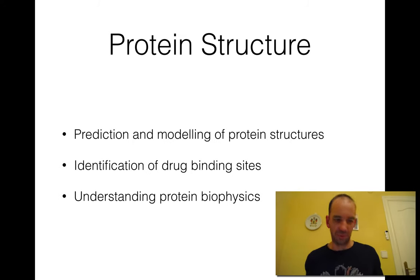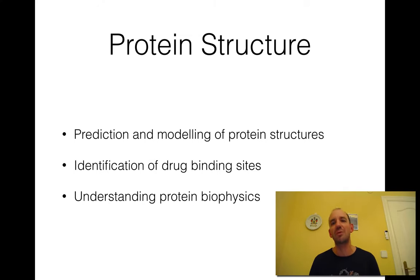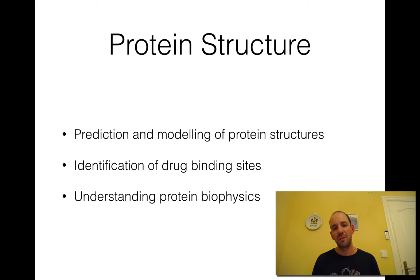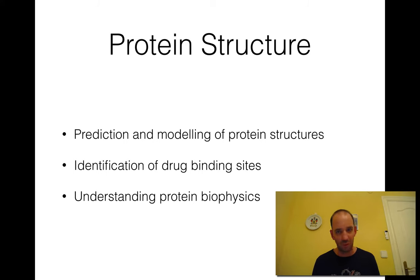Protein structure has from the beginning been an important part of bioinformatics, and is a big focus of this course. You may need to define and model protein structures because it is so much cheaper to sequence DNA than to determine a protein structure experimentally. For most proteins in the world, you will never have an experimentally verified protein structure. But using computational bioinformatics methods, we can actually produce quite good models, which can be used for understanding protein function, identifying drug binding sites, and understanding the physics and evolution of protein folding.